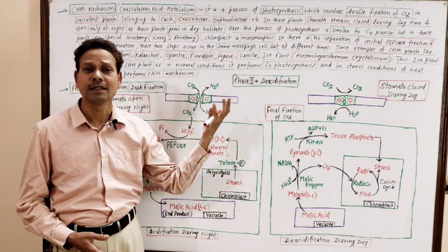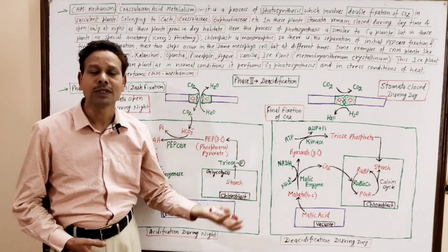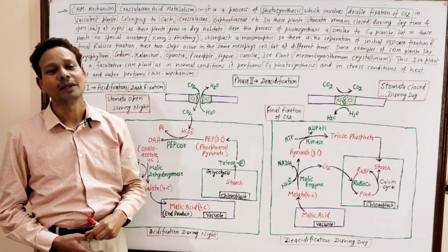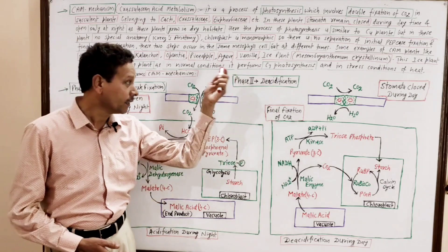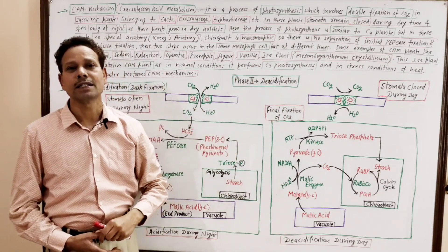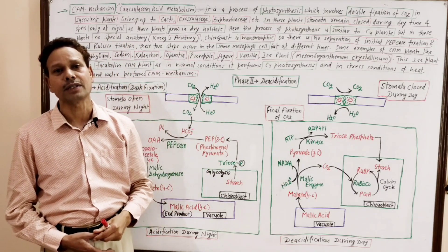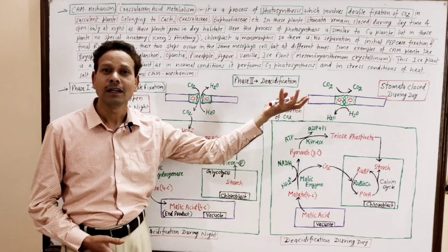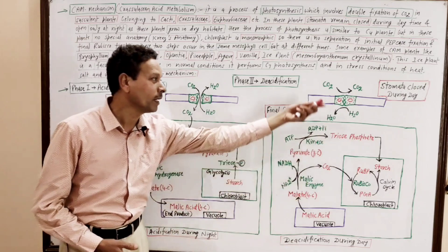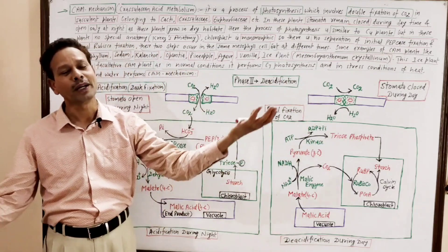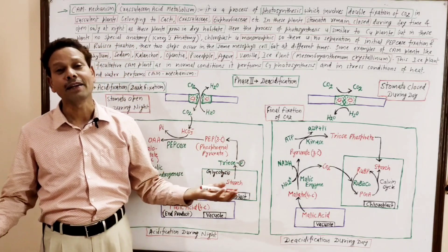In these plants, stomata remain closed during daytime and stomata open during night. In these Crassulaceae plants, which are well adapted to xeric and dry conditions, in order to prevent the loss of water and to reduce the rate of transpiration, the stomata remain closed during daytime and open at nighttime.